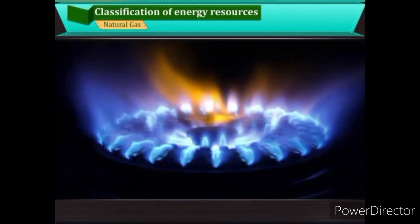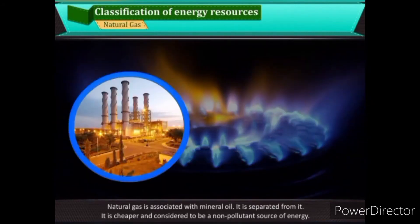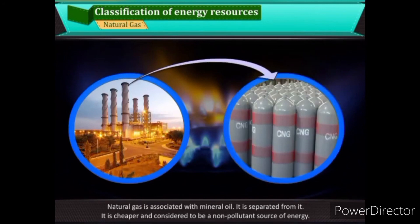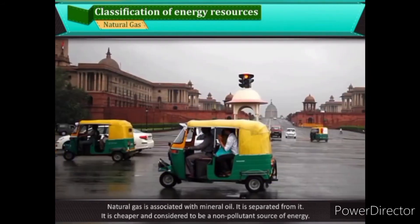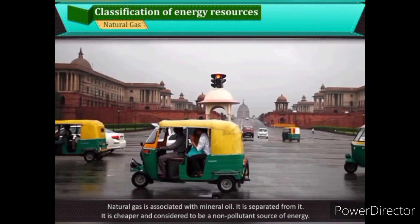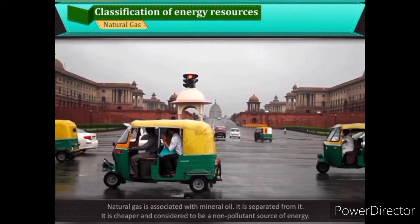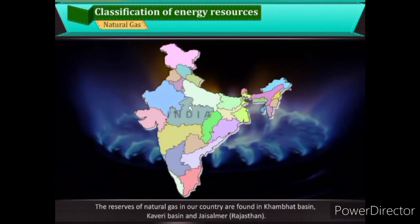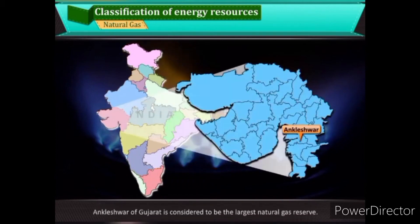Natural gas is associated with mineral oil and is separated from it. It is cheaper and considered to be a non-pollutant source of energy. The reserves of natural gas in our country are found in the Khambhat Basin, Kaveri Basin, and Jaisalmer, Rajasthan. Ankleshwar in Gujarat is considered to be the largest natural gas reserve.